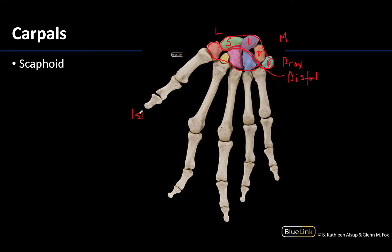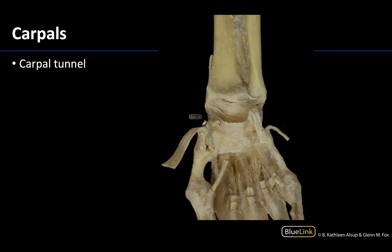I know this is lateral because you can tell this is the first digit here — it doesn't have an intermediate phalange, the bones are just a little bit stouter but also shorter. We know we're looking at the first digit, and in anatomical position the first digit is always lateral. Looking at the distal row from lateral to medial, you'll have the trapezium, the trapezoid, the capitate, and the hamate. Again, the only one you have to identify in a practical setting will be the scaphoid.